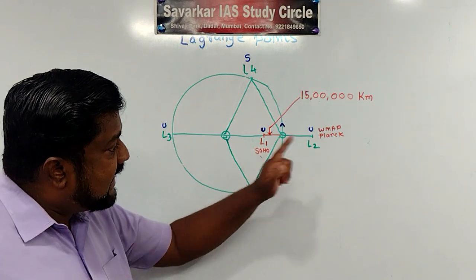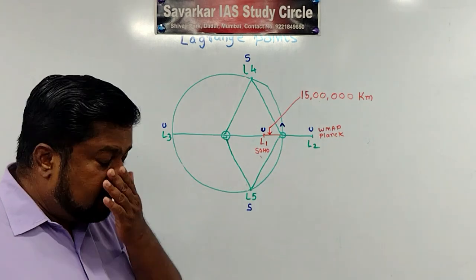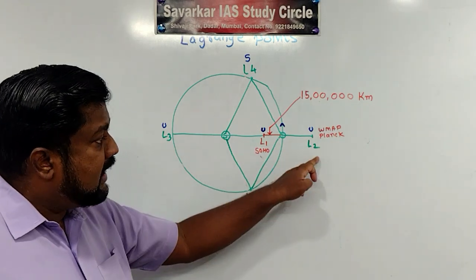Okay. Whereas L2 is exactly opposite to the Earth. So opposite to the Sun from Earth. So these two points L1 and L2.